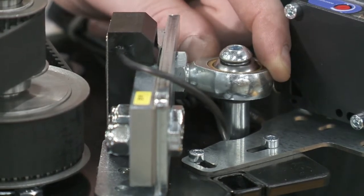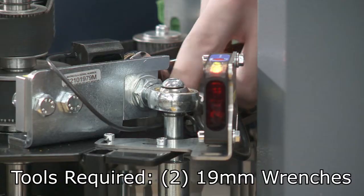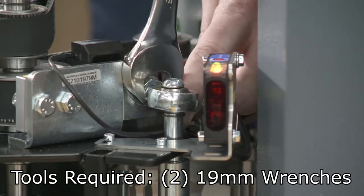Rarely, the connecting linkage between the roller and sensor can be loose. Tighten this connection, ensuring the roller is centered in the cutout.